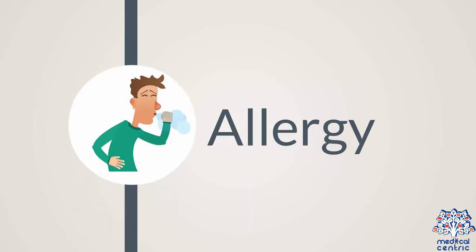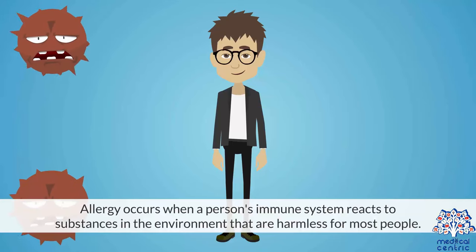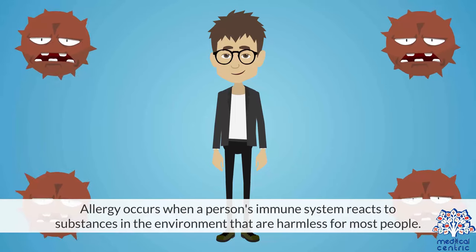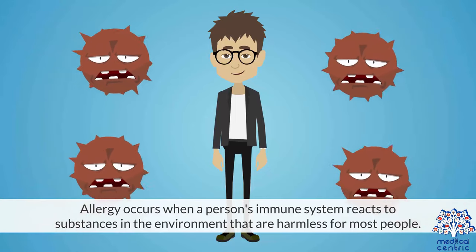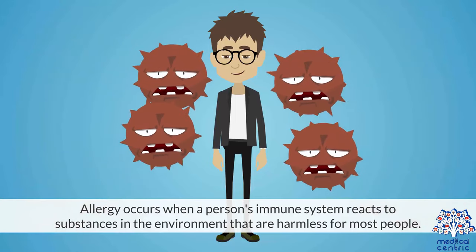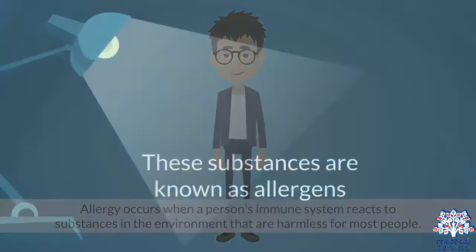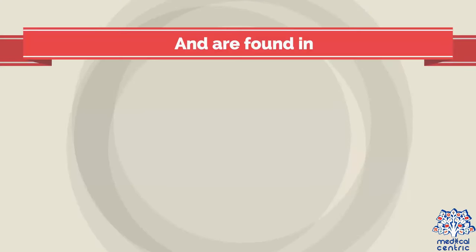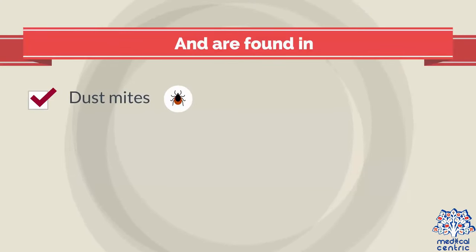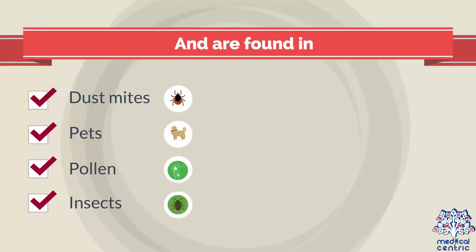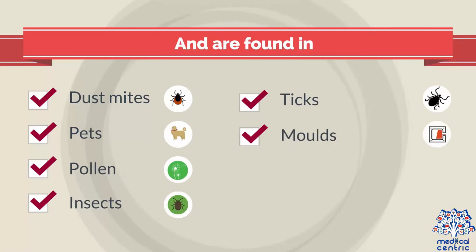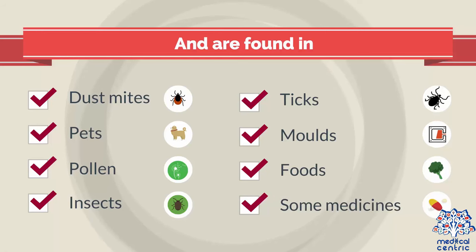Today's topic is allergy. Allergy occurs when a person's immune system reacts to substances in the environment that are harmless for most people. These substances are known as allergens and are found in dust mites, pets, pollen, insects, ticks, molds, foods, and some medicines.